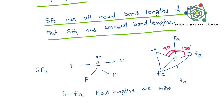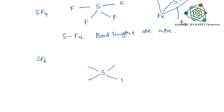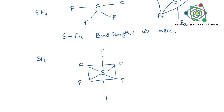In SF4, the axial S-F bond length is greater due to lone pair repulsion. In SF6, all bond angles are 90 degrees and repulsions are equal in all directions, so bond lengths are all the same. In PCl5, equatorial bond angles are 120 degrees and axial bond angles are 90 degrees, which is why axial bond lengths are higher than equatorial bond lengths. This equatorial concept is very useful for inorganic chemistry.